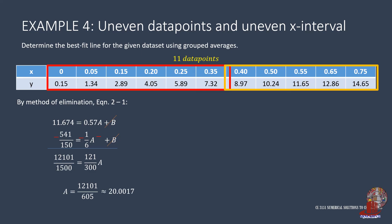Place these into equation 1. We have 541 over 150 as equal to 1/6 of 12101 over 605 plus B, where B becomes 826 over 3025, or 0.2731, through multiplication and subtraction.